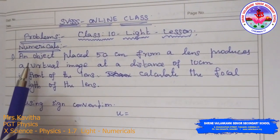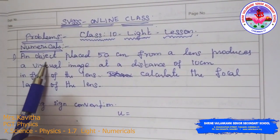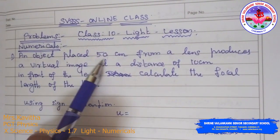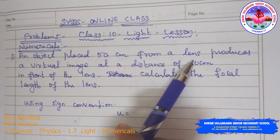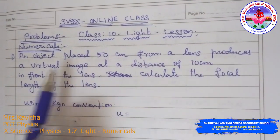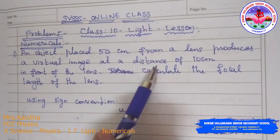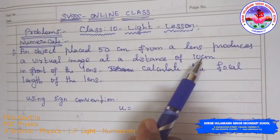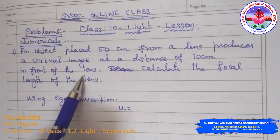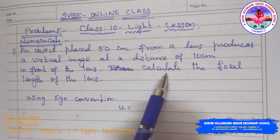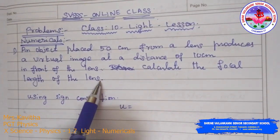Now the first numerical: an object is placed 50 cm from a lens and produces a virtual image at a distance of 10 cm in front of the lens. Calculate the focal length of the lens.